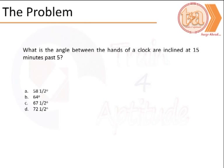In this case we have to find the angle between the hands of the clock when it is 15 minutes past 5, that is 5:15. We have a certain set of options and we need to find the right answer amongst these.